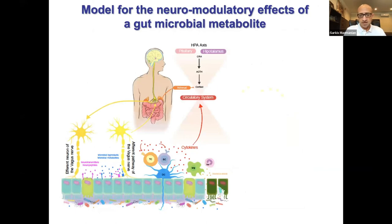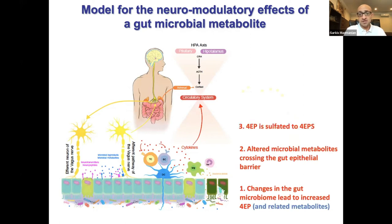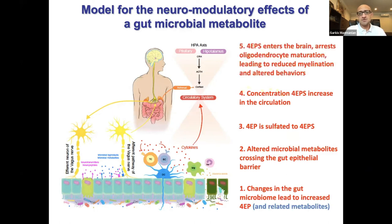To summarize: there are changes in the autistic metabolome — not just the microbiome, but the molecules these organisms produce. Those metabolites get across the intestinal barrier, potentially more so in individuals with leaky gut. In this particular case, 4-ethylphenol is sulfated to 4-ethylphenyl sulfate, which increases in circulation and ultimately gets into the brains of mice, arrests oligodendrocyte maturation, and leads to behavioral changes via altered myelination patterns.